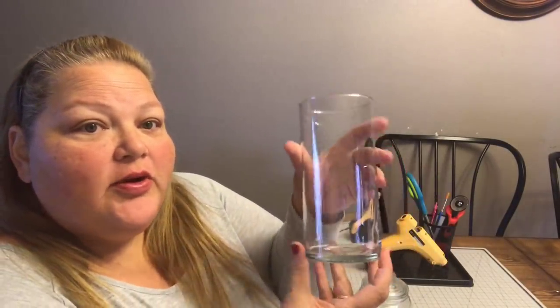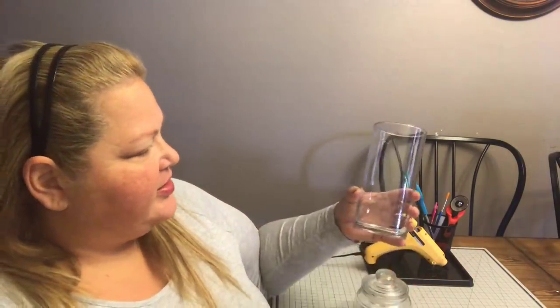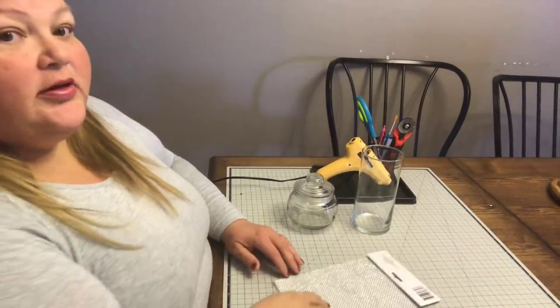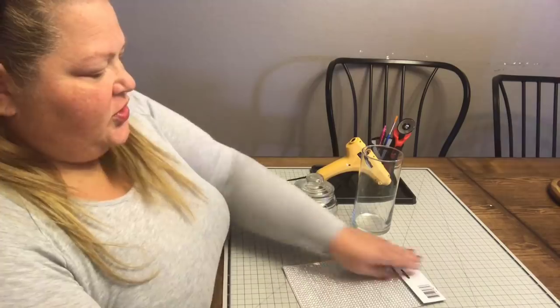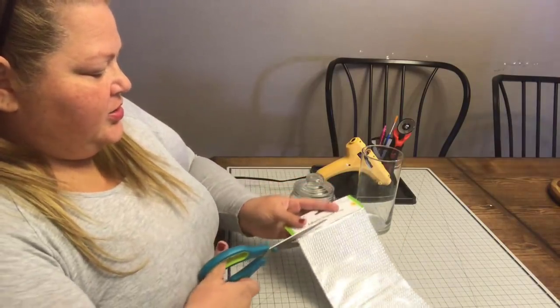First things first, what did I buy for the project? Everything was from the Dollar Tree. I've got a cylinder, one of these candy dishes, some adhesive diamond wrap, and then this beautiful ornament. Let's go ahead and get started. I also have my scissors and my glue gun.